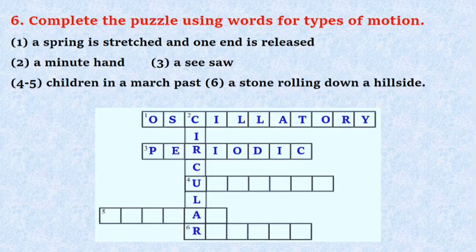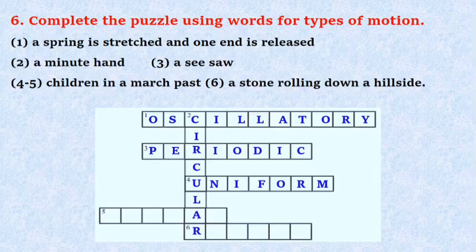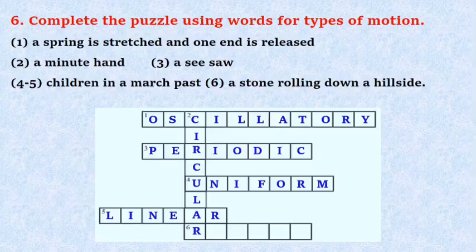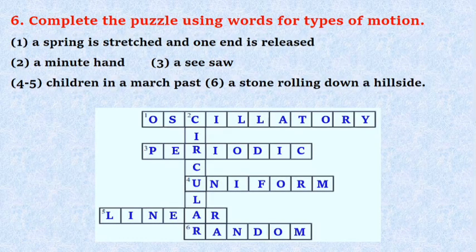Third, a seesaw. Answer is Periodic. Fourth, children in a march past. Answer is Uniform and Linear. Sixth, a stone rolling down a hillside. Answer is Random.